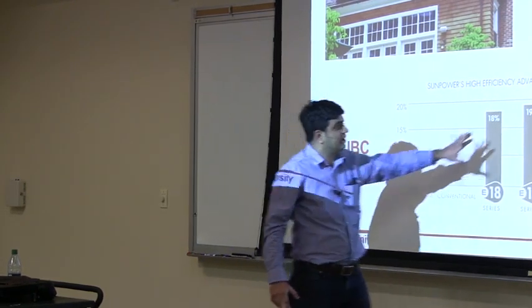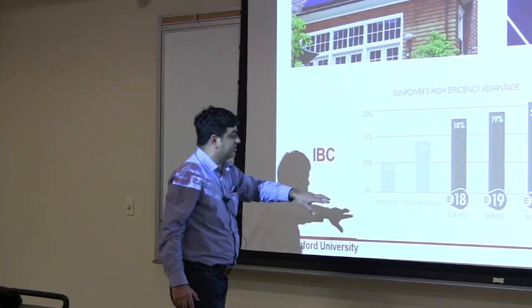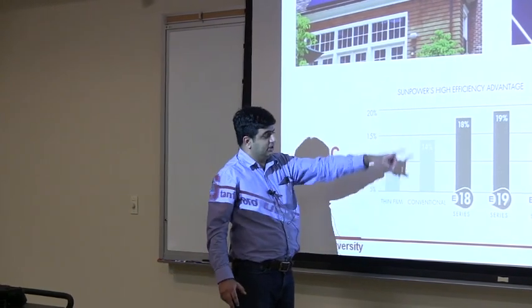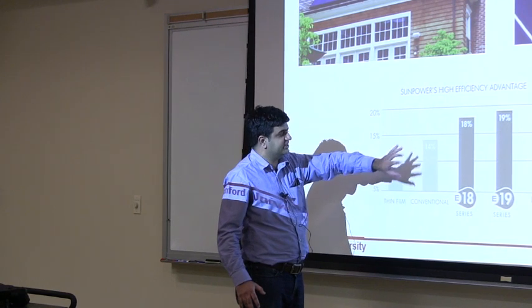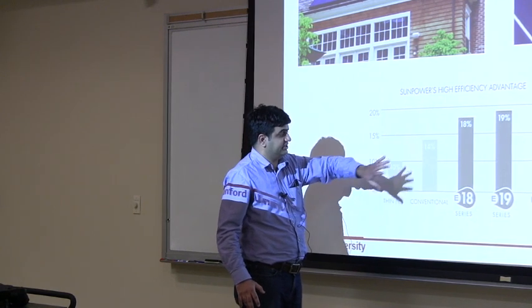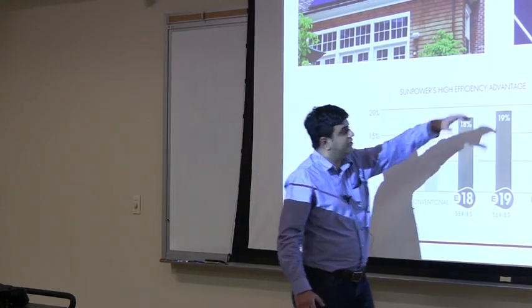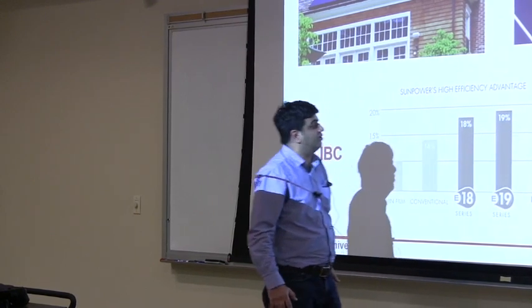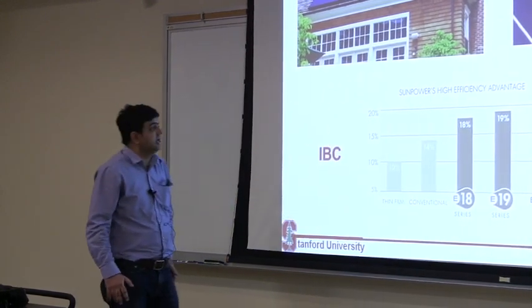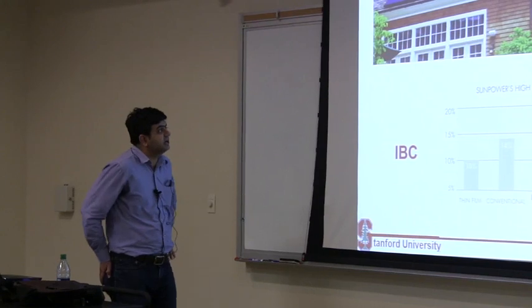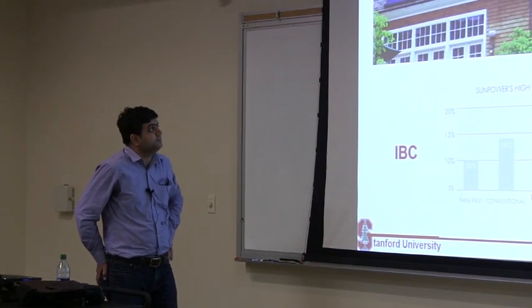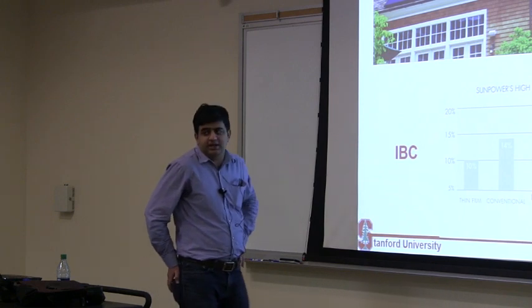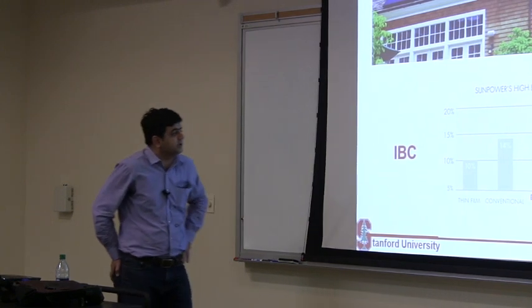These are typically much higher efficiencies than what you get from other front contact-based cells that most Chinese suppliers sell. These have module efficiency of up to 20%. By just looking at somebody's roof, you can tell where that cell came from.